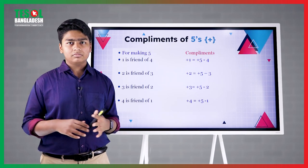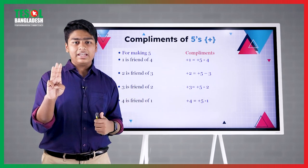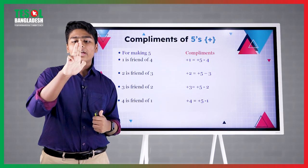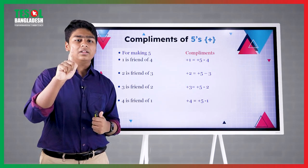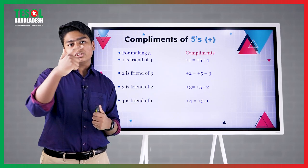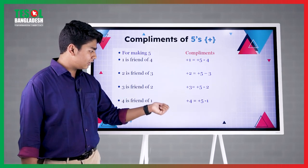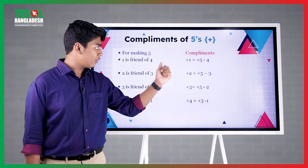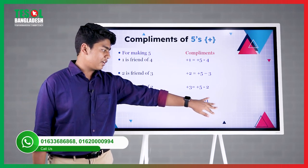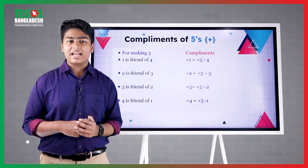Let's take a sum: 3 plus 3. Who is the friend of 3? It is 2. So the captain will come to rescue and 2 will be subtracted since it's the friend of 3. Our answer is 6. Very well done. And our last combination for complements of 5 is: plus 4 equals to plus 5 minus 1. The captain comes and then the friend will sacrifice. It's as simple as that.